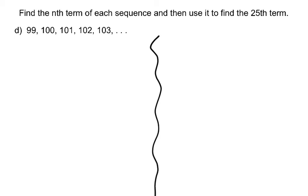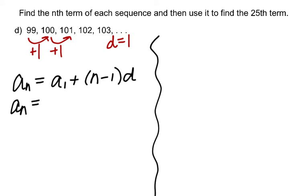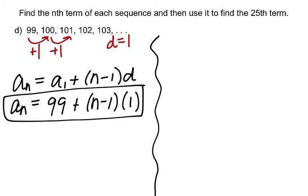Example d. What's the pattern? From 99 to 100, 100 to 101 — it looks like we're adding 1 every time. That's what makes the sequence arithmetic, so our common difference is 1. Using the formula, my first term is 99, and I'm adding n minus 1 times d, where d is 1.